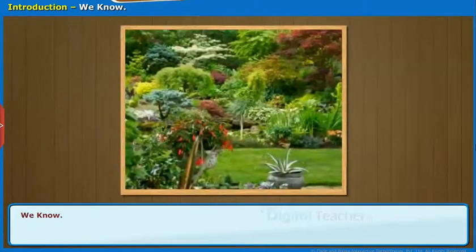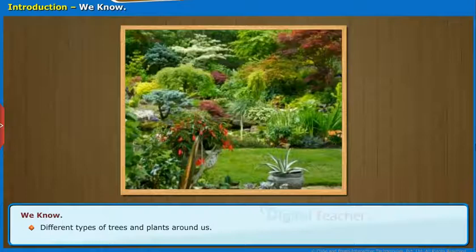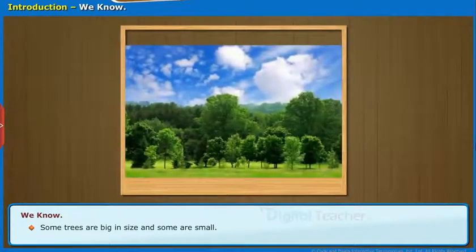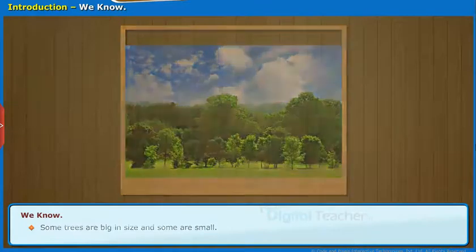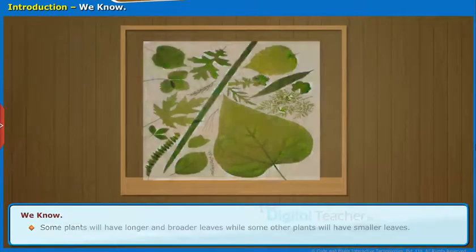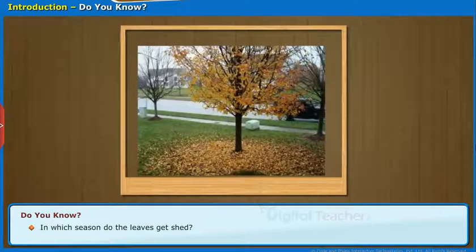Now let us start our chapter with the introduction. In the previous chapter, we have learnt different types of trees and plants around us. The size of different trees is different — some trees are big in size and some are small. Some plants will have longer and broader leaves while some other plants will have smaller leaves. Do you know when the color of the leaf changes? In which season do the leaves get shed?